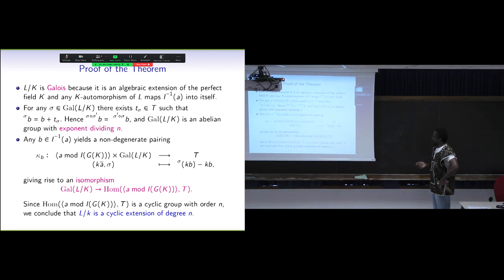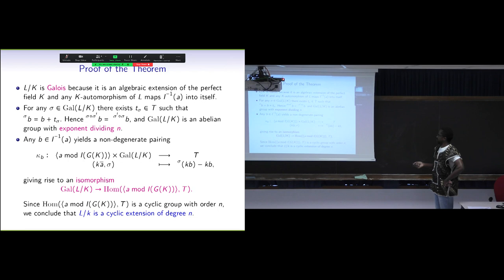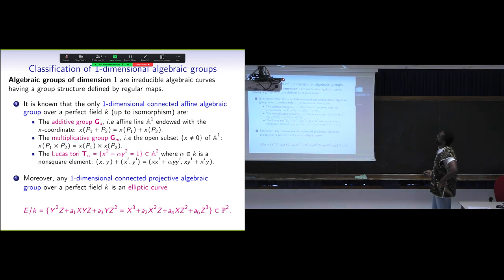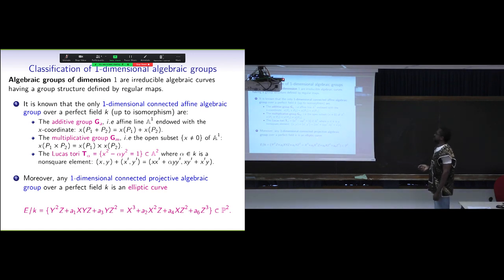We have a non-degenerate pairing from this product to this, which means we have an isomorphism. This group is cyclic of order N, which is the Galois group of order N and is cyclic. We take a one-dimensional algebraic group because we know the classification: over a perfect field there are only a few types — the additive group, the multiplicative group, the Lusztig-Tits group, and in the projective case, elliptic curves. So we do the work for all of these.